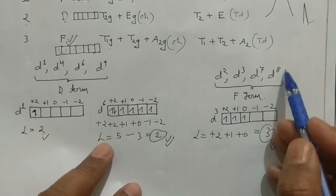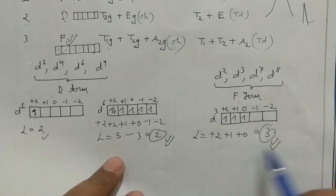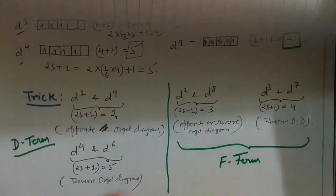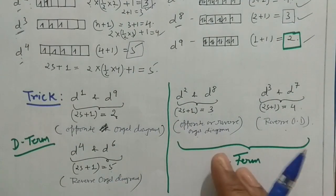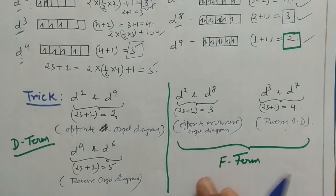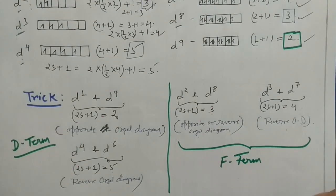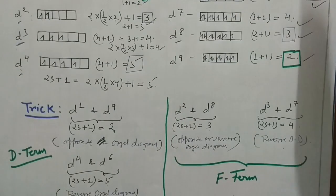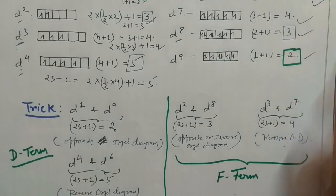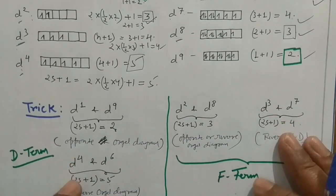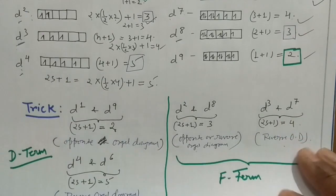This is a simple way to form Orgel diagrams. The key trick to remember: same spin multiplicity between two systems → they have opposite/inverted Orgel diagrams. Keep this as a trick, and it will make generating all Orgel diagrams much easier.